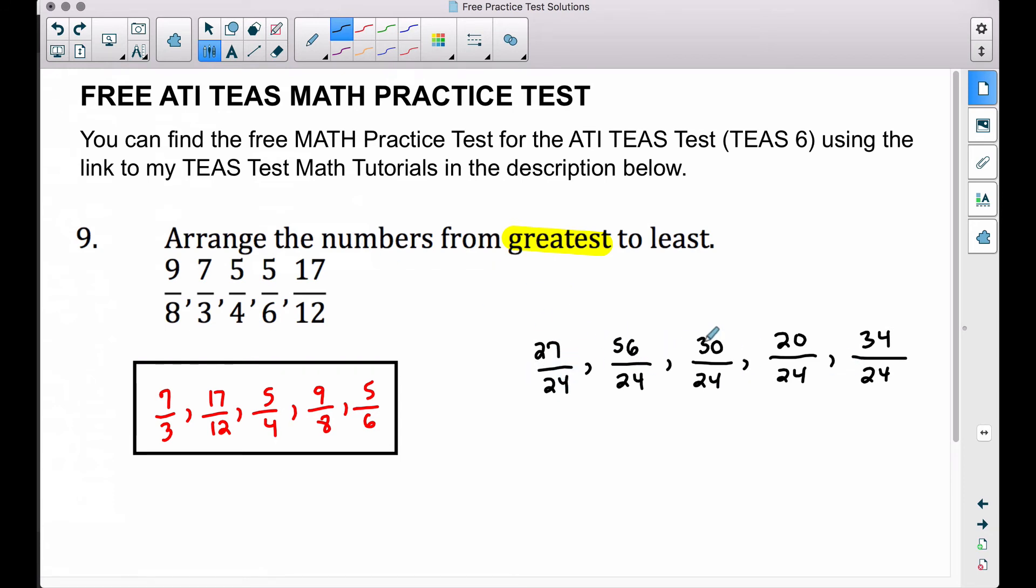If you were to go and divide these in the calculator, you would get those exact same decimals we looked at earlier. But what we can do now is we can just look and see which one has the biggest numerator, and that's going to be our greatest fraction. The 56 is the bigger numerator of all of these, which corresponds to that second fraction, the 7/3. Moving right on along, the next biggest numerator we have is the 34 here, so that's going to be the 17/12, which matches that one.